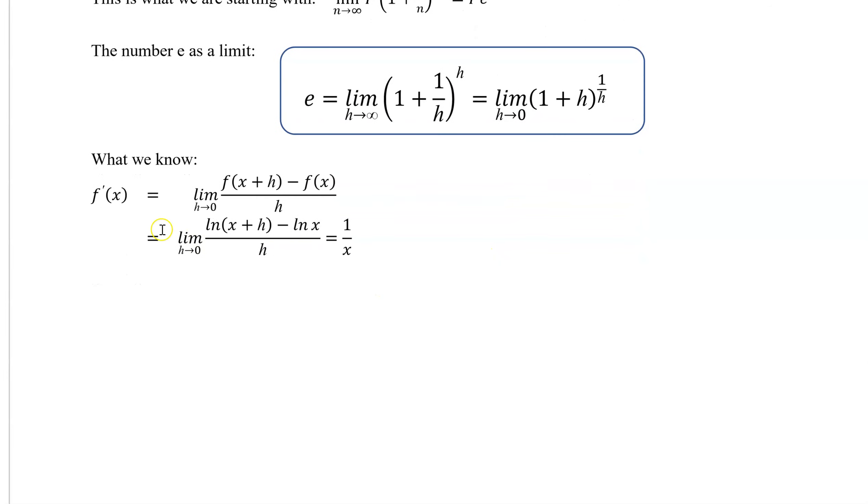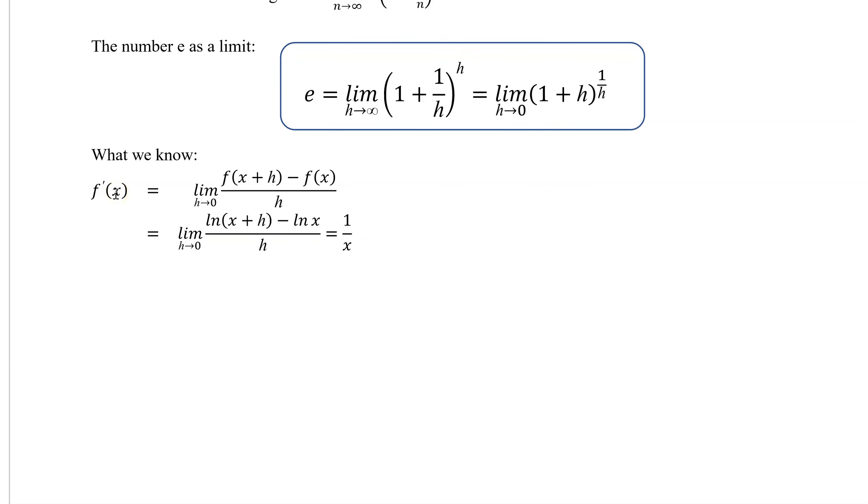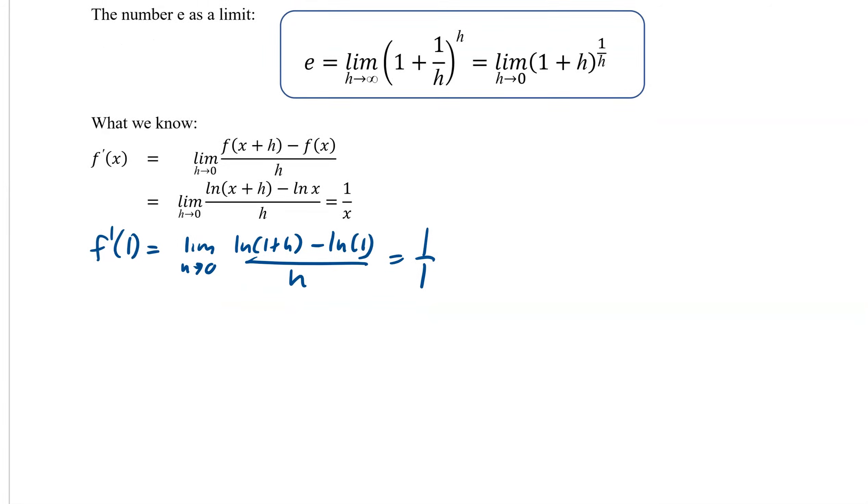All right. So we already know the derivative for anything is our difference quotient. It's the limit as h approaches zero of the difference quotient. So now what I've done is plugged in natural log for our functions. And we know that the derivative is 1 over x. So now what we're doing right now, by the way, is proving e. So if we plug in 1, we get the limit as h approaches zero, natural log of 1 plus h minus natural log of 1 is equal to 1 over 1. So that's just 1.